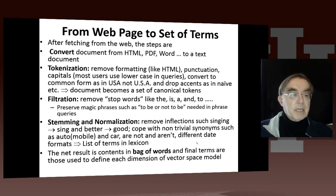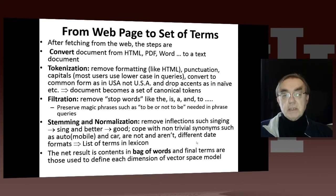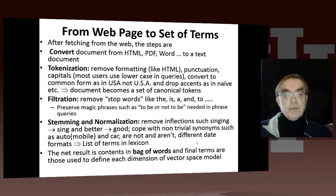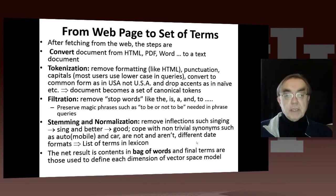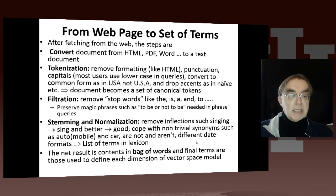Even if capitals are logically important, they're not so important for query matching because people don't use capitals very often in queries. You convert common forms, like using 'USA' instead of 'U.S.A.', and drop accents, as in 'naive'. You then have canonical tokens, which your document has become.